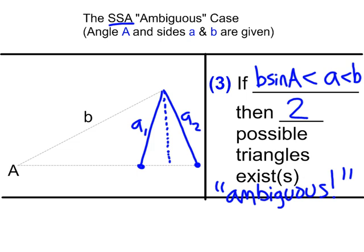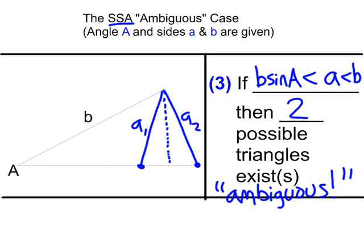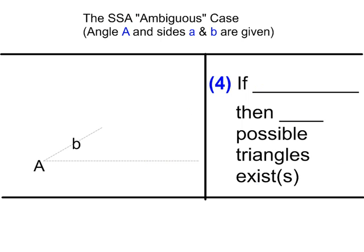Just to be clear: in the ambiguous case we could consider either this triangle or that triangle. We'll solve for both of those two possible triangles in the next lesson.